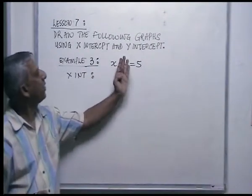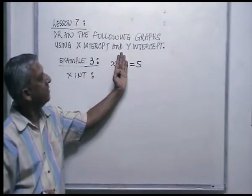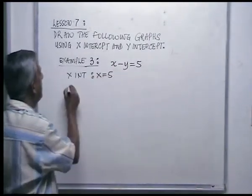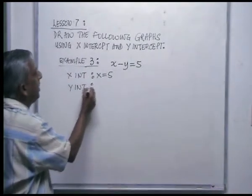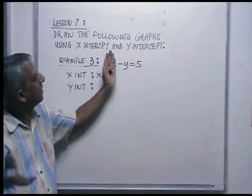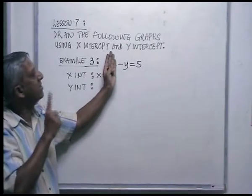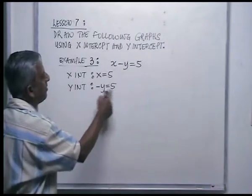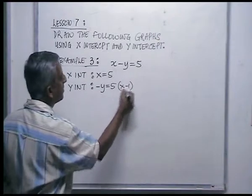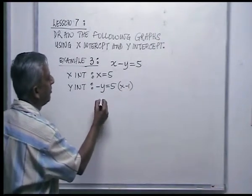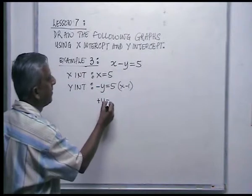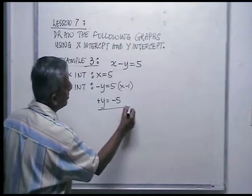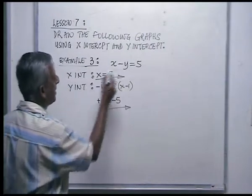To find the x-intercept, put y equal to 0, so x is equal to 5. For the y-intercept, put x equal to 0, and you get minus y is equal to 5. Multiply both sides by minus 1: minus 1 times minus y gives you plus y, and minus 1 times 5 gives you minus 5. So the x-intercept is 5 and the y-intercept is minus 5.